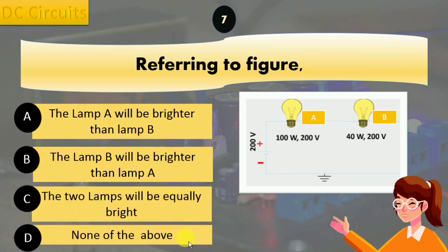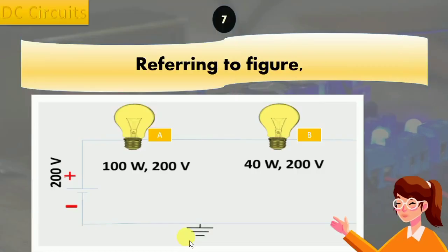Option D: none of the above. When two bulbs are connected in series, the same current flows through both bulbs. The brightness of a bulb is determined by the amount of power it dissipates, which is related to the resistance of the bulb.